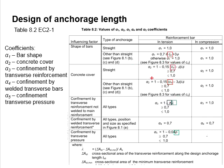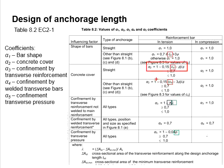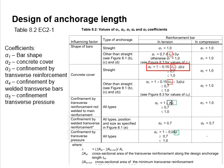Next we discuss coefficient alpha 2, which represents the effects of concrete cover. There are two main types of anchorage: the straight bar and the hook or bend anchorage. The equations to compute alpha 2 for the straight bar and the hook and bend bar are given here. The main difference between the two equations is the three times the bar diameter term.